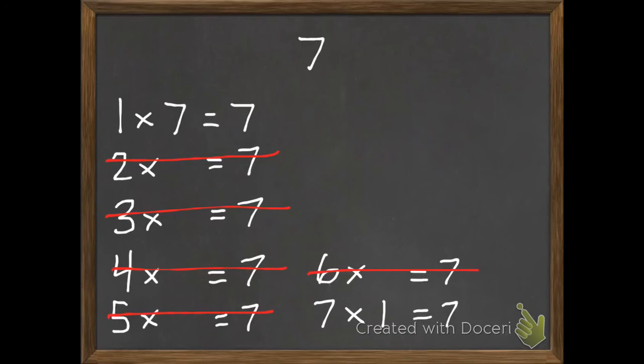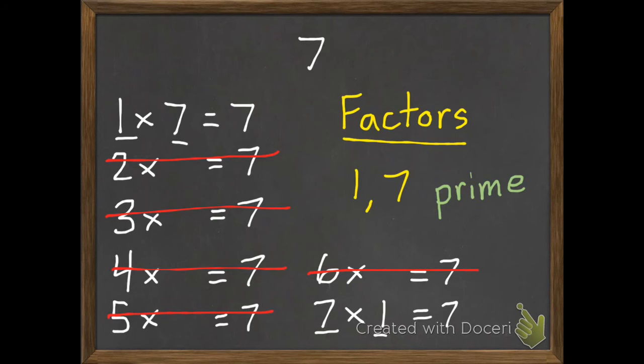Works. But we already have 1 and 7. So we don't need to write those again. So the factors of 7 are just 1 and 7. If we ever have a product that only has factors of 1 and itself, in this case 7, this is a special number called a prime number. Because it only has the factors of 1 and itself.